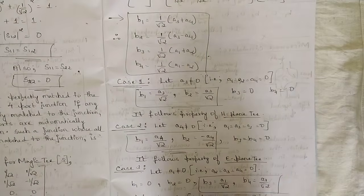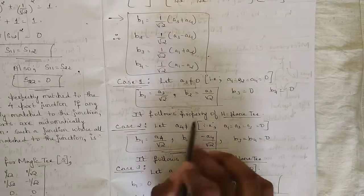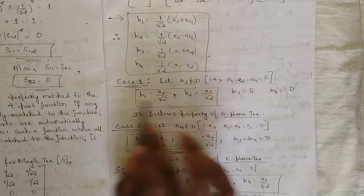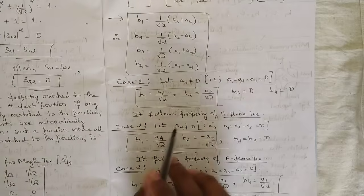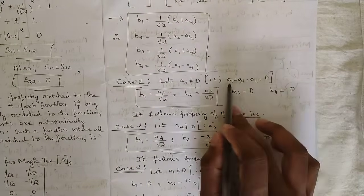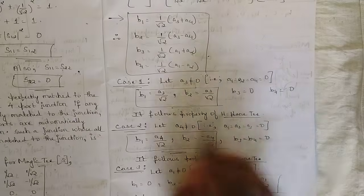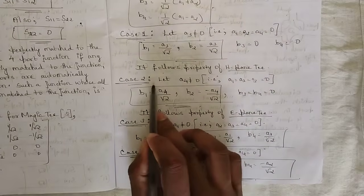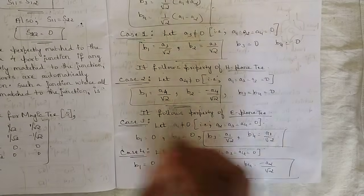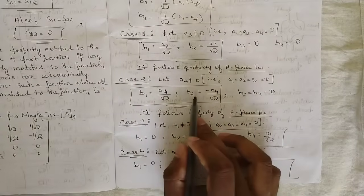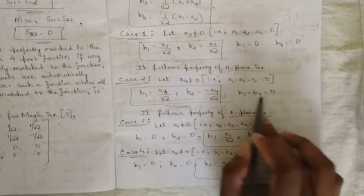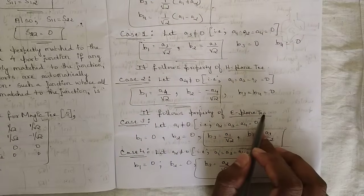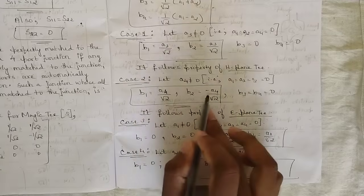Case 1 follows the property of H-plane T — when a3 is active, b1 and b2 are equal. Case 2: if a4 ≠ 0 and a1 = a2 = a3 = 0, then b1 = a4/√2 and b2 = −a4/√2, with b3 = b4 = 0. Here b1 and b2 are equal in magnitude but opposite in sign, so this follows the property of E-plane T.